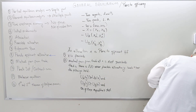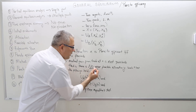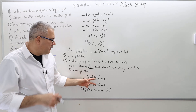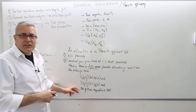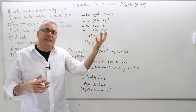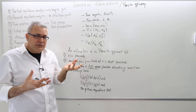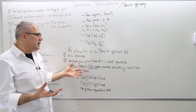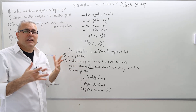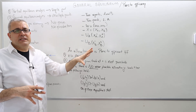An allocation x is Pareto efficient if it is feasible and there is no other feasible allocation y such that both agents have higher utility than at allocation x, with at least one strictly higher — that is, a win-win situation. If we exchange, we both can win. If there is no such situation, then it is Pareto efficient, meaning we've basically exhausted all possible mutual gain situations.